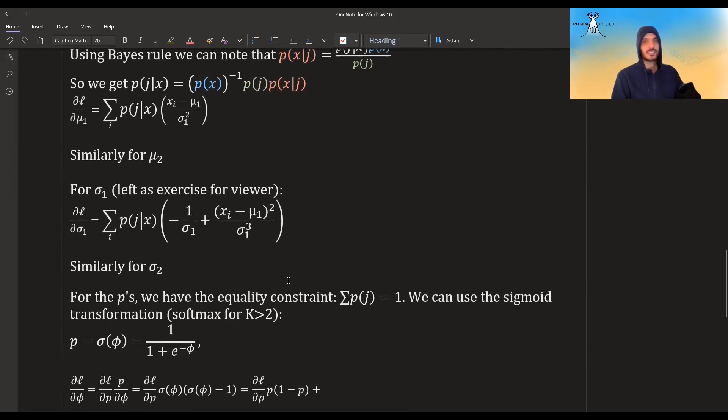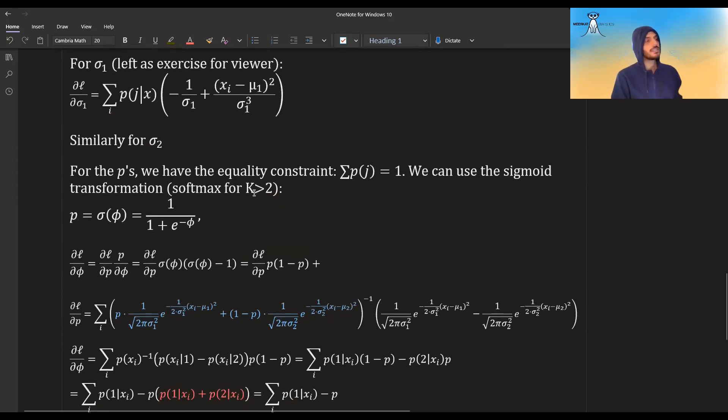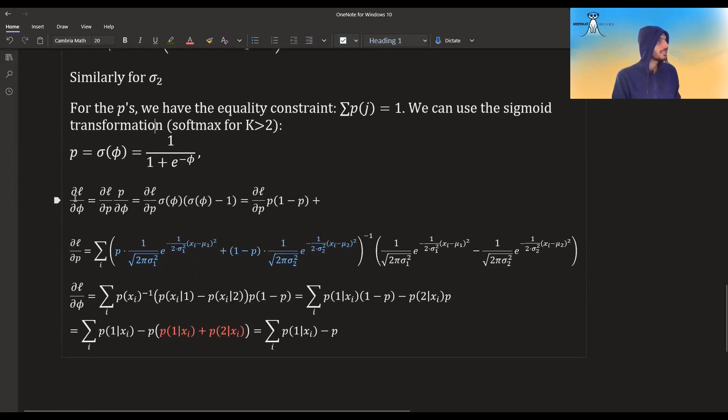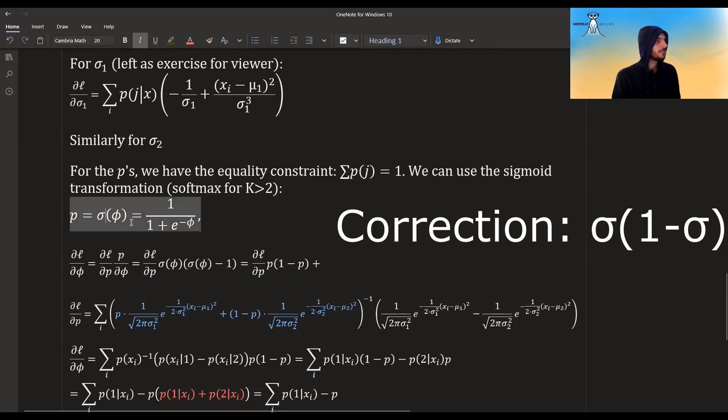For the p's, we have an equality constraint, right? We have that the sum of p equal to one, but what we could do is use a sigmoid transformation, or in case k is greater than two use a soft max transformation. What it means, it means that the p's are not what we are actually maximizing. We are saying that the p's are the final step of the maximization, but we also then have another parameter that defines the p and we are maximizing with regards to that parameter. So if we say p is equal to the sigmoid of some phi, p it's just equal to this function, you can see that this function is between zero and one, and p plus one minus p will be equal to one, of course. So if we take the derivative of the log likelihood with regards to this parameter, using the chain rule, we can break it down to this, and the derivative of the sigmoid is just the sigmoid times sigmoid minus one.